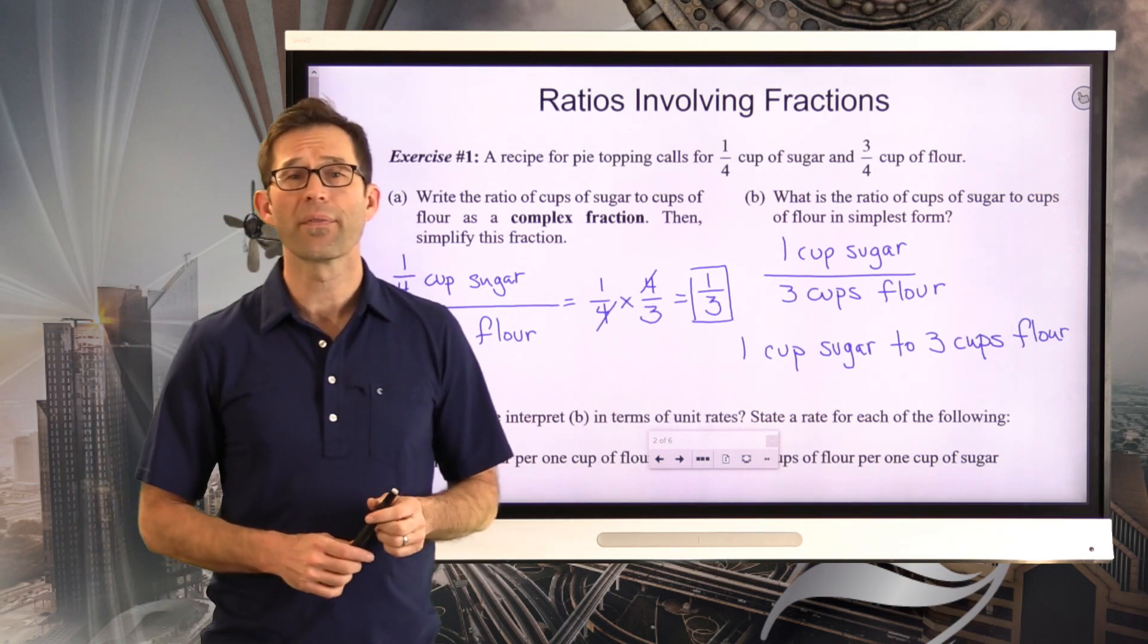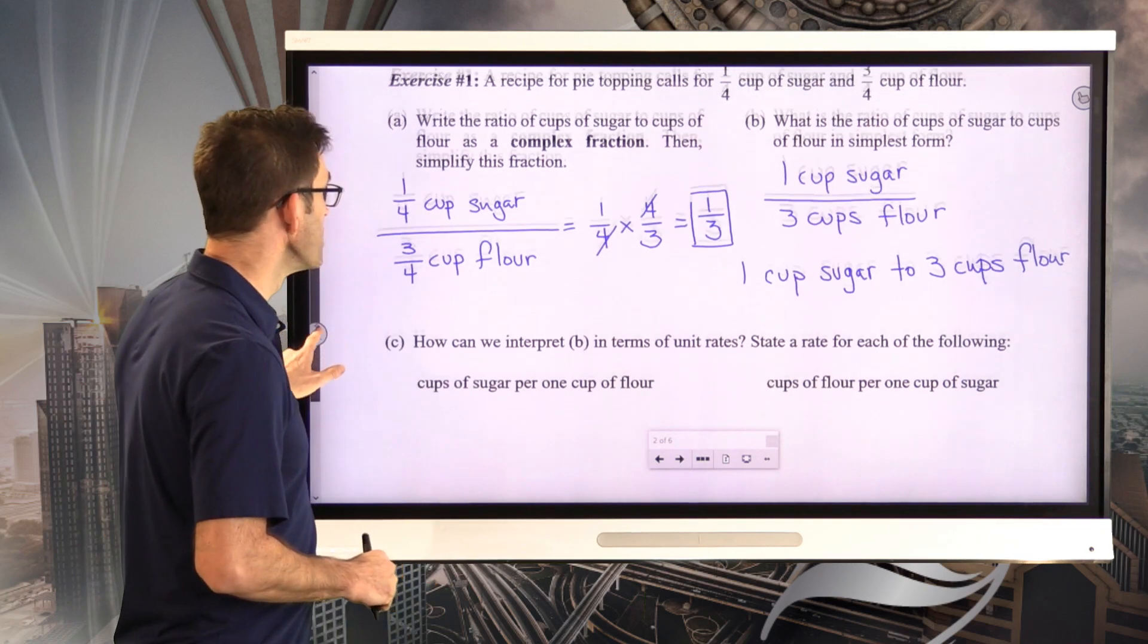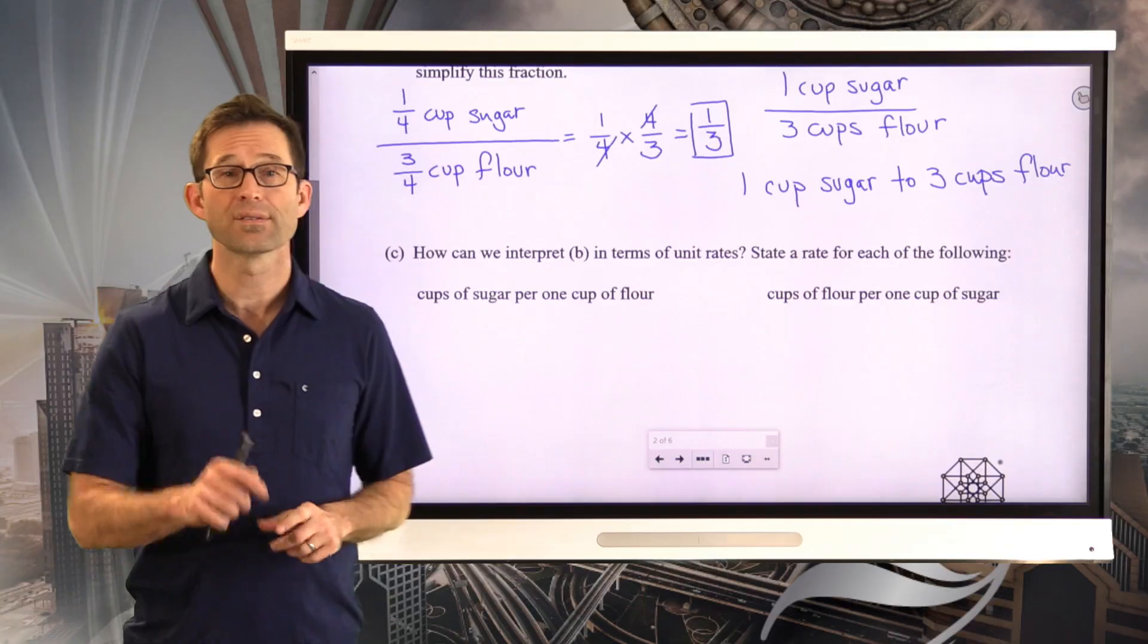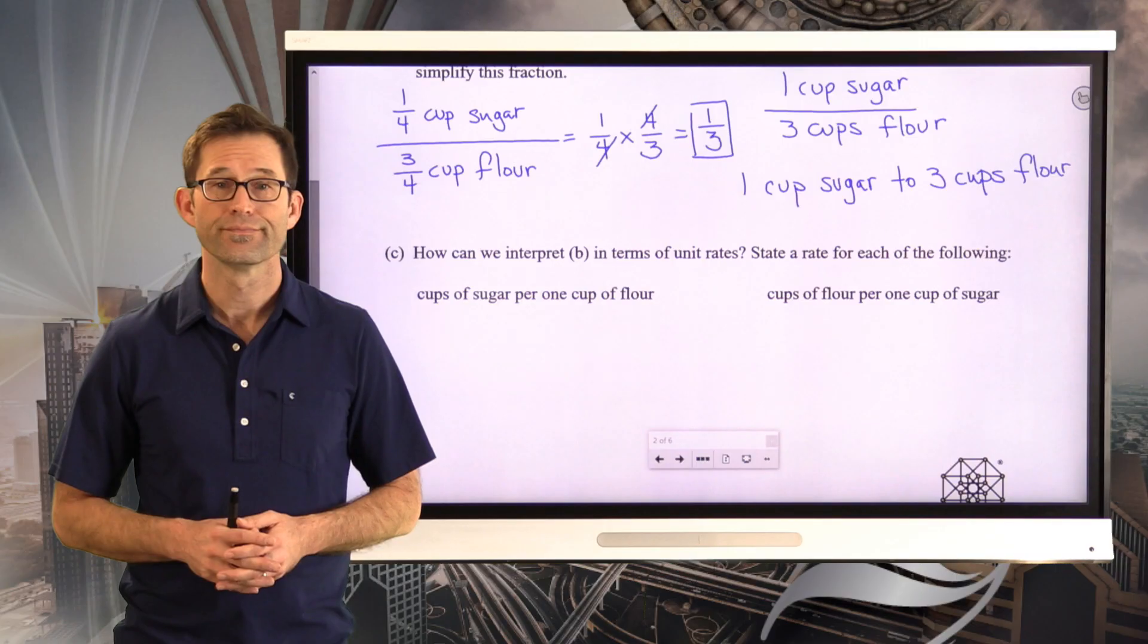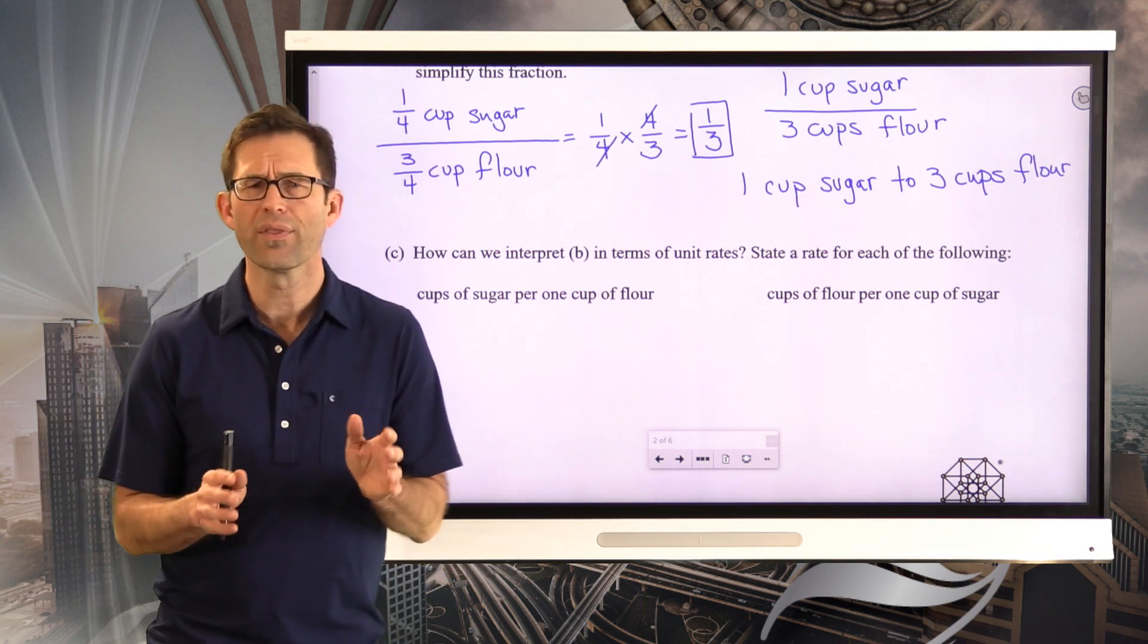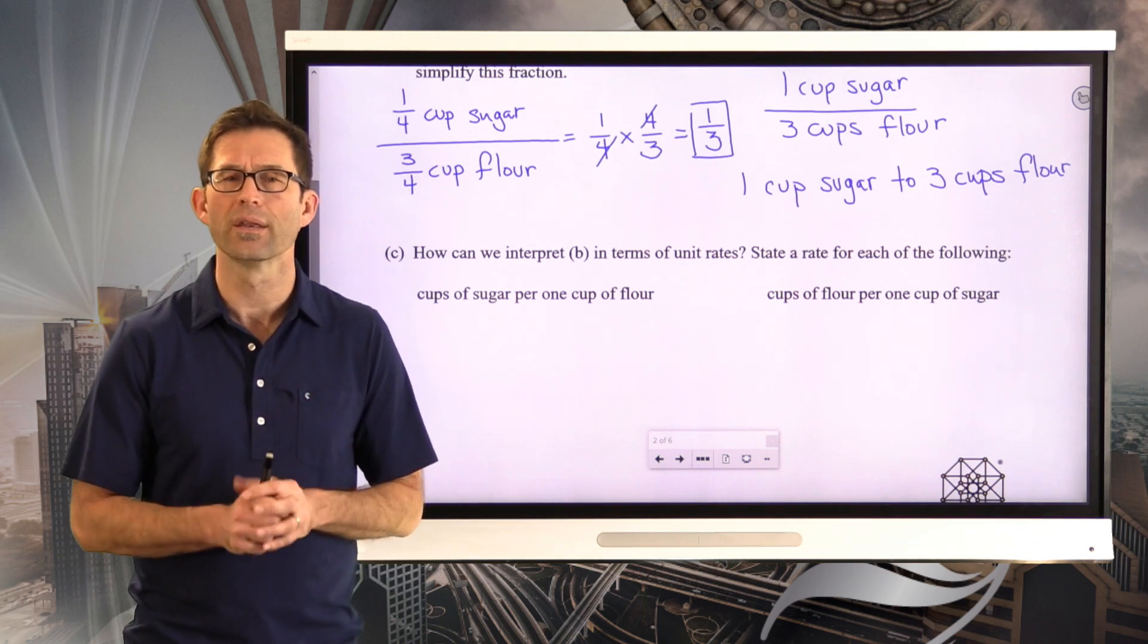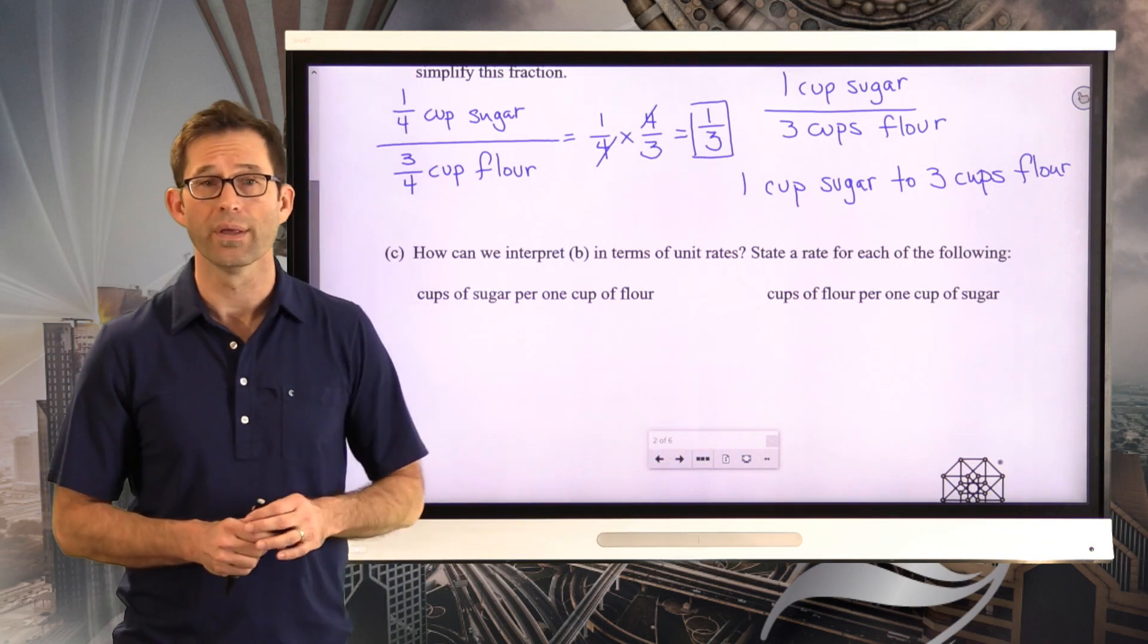But now, let's talk a little bit about this topic that we saw in the last lesson, unit rates. Letter C asks us the following. How can we interpret letter B in terms of unit rates? State a rate for each of the following. Cups of sugar per one cup of flour, and cups of flour per one cup of sugar. What I'd like you to do is pause the video now and think about both of these unit rates.